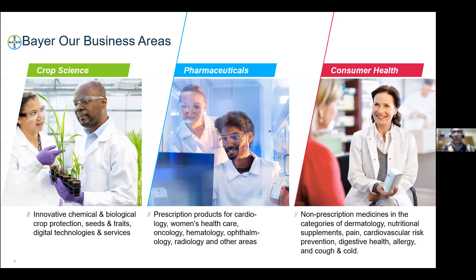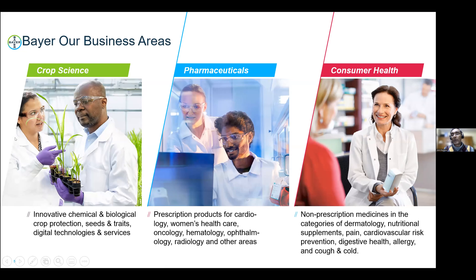A little bit about what Bayer does: Bayer actually has three business verticals — crop science, which is the part I represent, pharmaceuticals, and consumer health. Pharmaceuticals makes various prescriptive medicines, and we have facilities all over the world — in Europe, the United States, and India. The company has more than one lakh (100,000) employees. Sales were about 43.5 billion, and we put back about 5 billion euros every year into R&D, showing the importance the company places on developing new things and better solutions for farmers worldwide. We operate out of 87 countries.